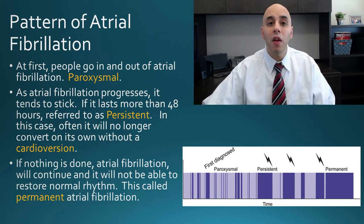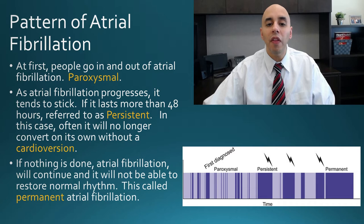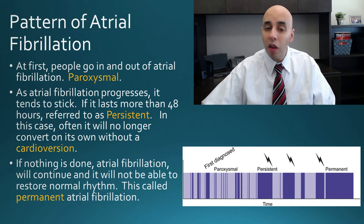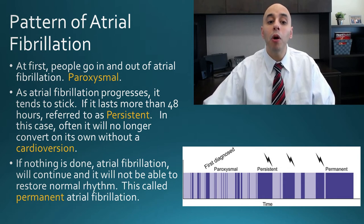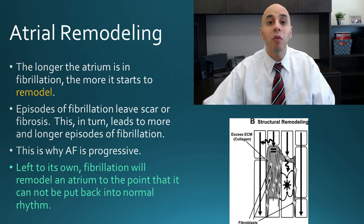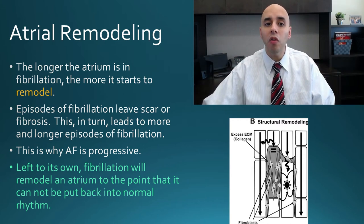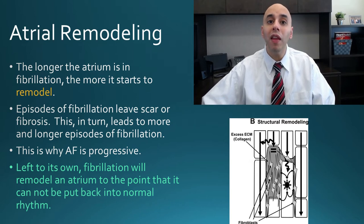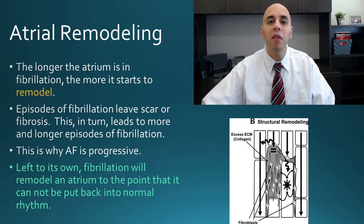As time goes on, it progresses to the point where it's no longer paroxysmal — it sticks, and you don't come out of it without help. We can shock you out of it using cardioversion, but if you do nothing, atrial fibrillation can progress to the point where we can't even shock you out of it, at which point it becomes labeled permanent atrial fibrillation. The reason for this progressive nature is remodeling — the chaotic electrical storm leaves scar within the atrium, making you more likely to go into it and have longer episodes, creating a positive feedback loop.